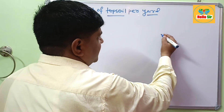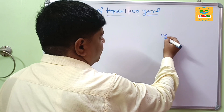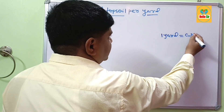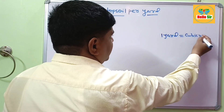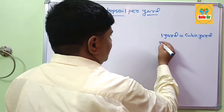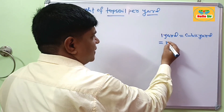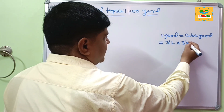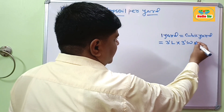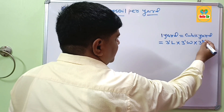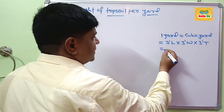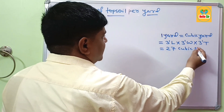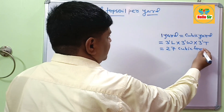You are familiar with one yard — this is also known as a cubic yard. This equals 3 foot in length, 3 foot in width, and 3 foot in thickness, which equals about 27 cubic feet.